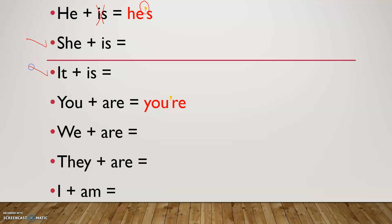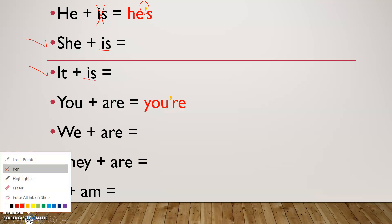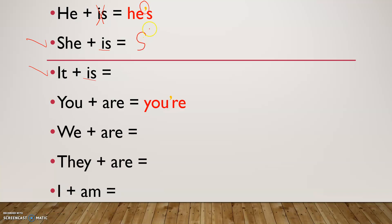Let's solve she and it, because both use 'is'. Pause and solve them the same way we solved he's. She is: we write 'she' as it is, cross the I in 'is', replace with apostrophe — she's. It is: we write 'it' as it is, cross the I, replace with apostrophe — it's. Now what about 'are'? You are, we are, they are. Remember, we can't say 'you is' or 'we is' — only he, she, and it take 'is'.